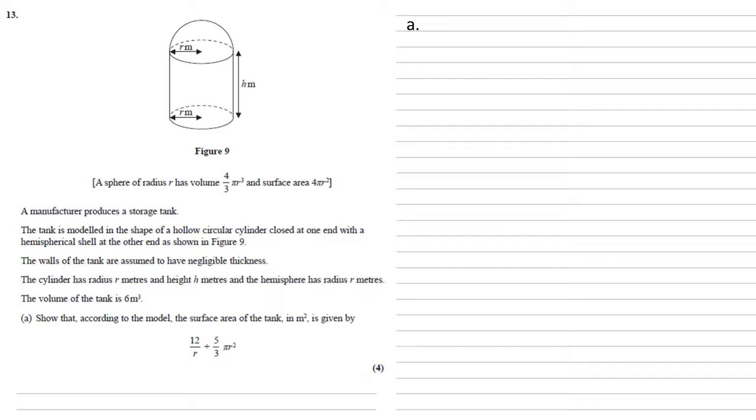We need to show that, according to the model, the surface area of the tank in square meters is given by 12 over r plus 5 thirds pi r squared. So, to start with, let's find an equation for the surface area.